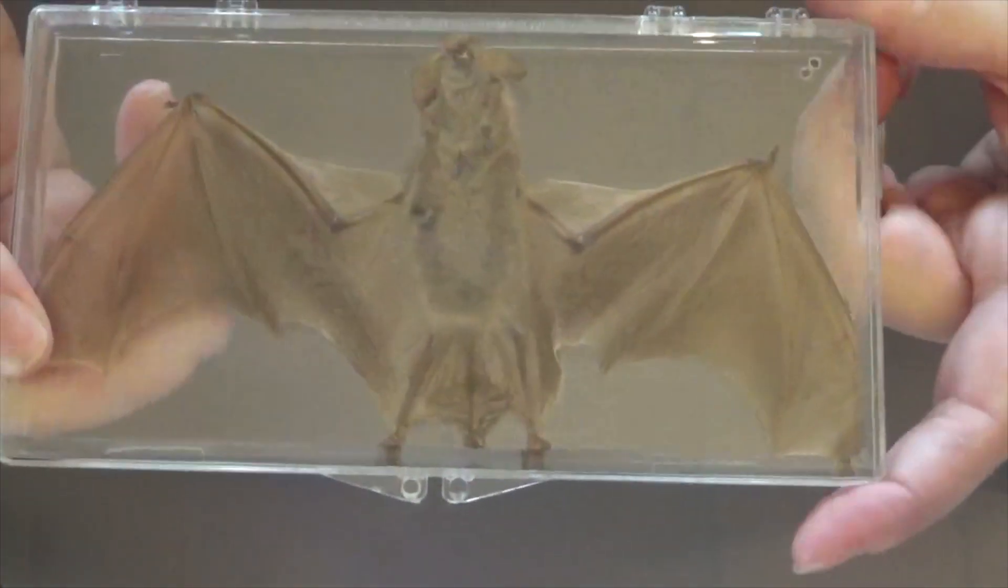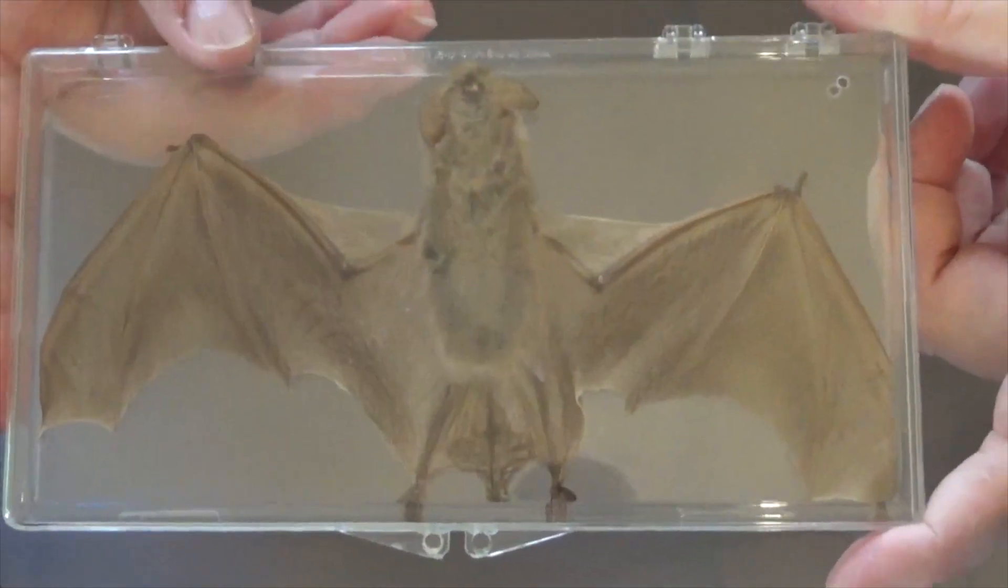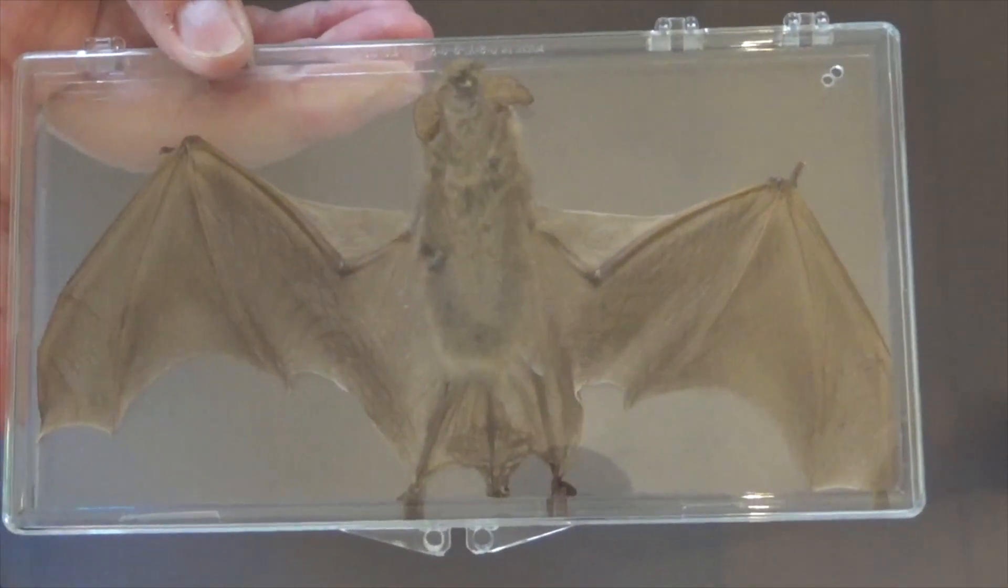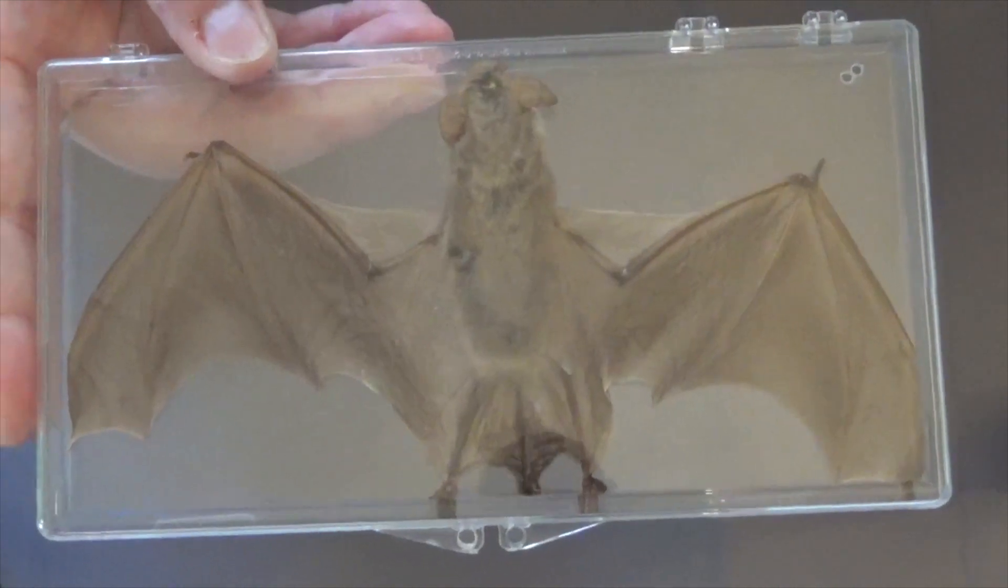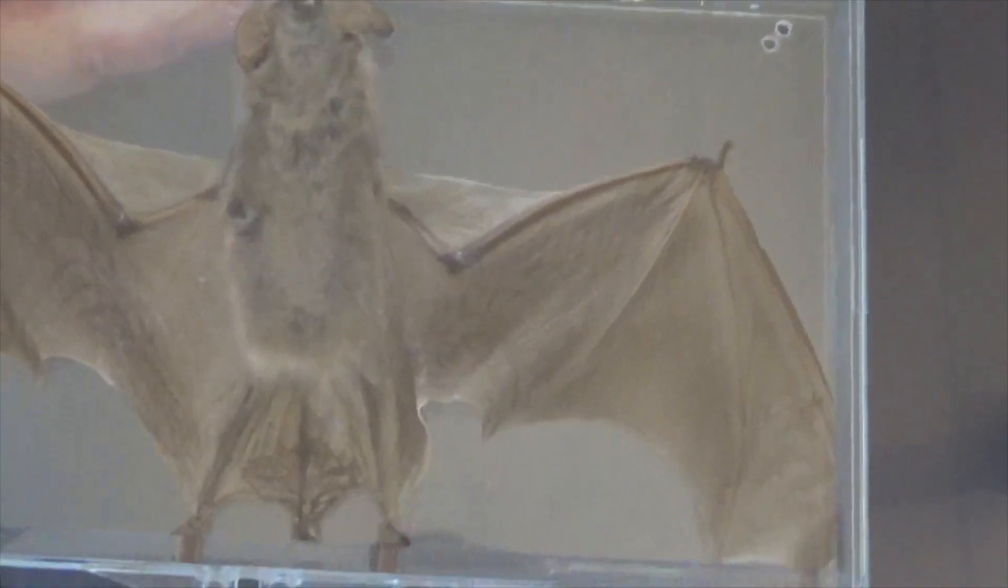Let me turn this guy around for you. So here is my bat with his wings extended. Now something really cool about a bat is that they fly with basically their finger bones. Let me see if I can get this guy up here pretty close for you to see.